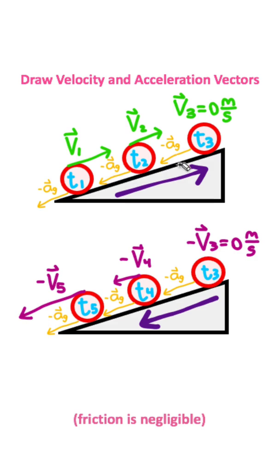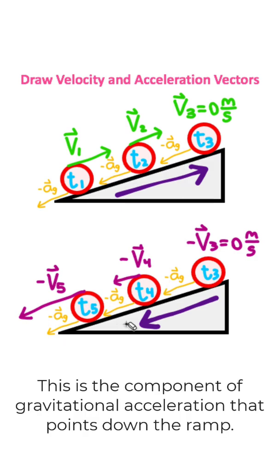Also, acceleration is constant. None of these vectors have a larger or smaller magnitude than the other one. That's because acceleration in this situation is due to gravity, and gravitational acceleration is a constant value.